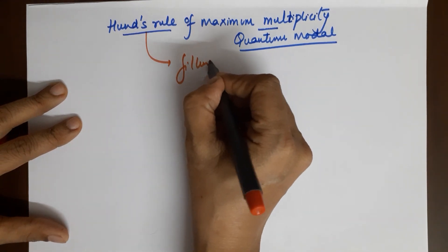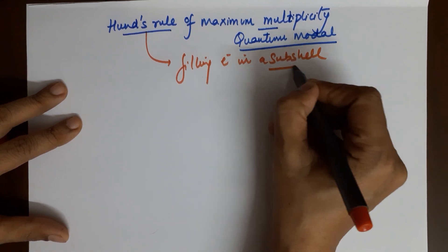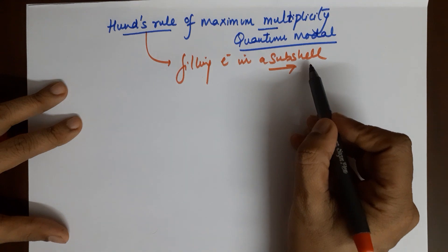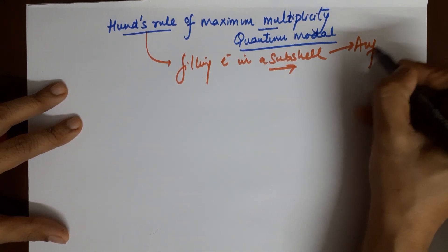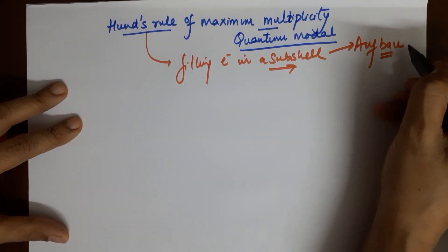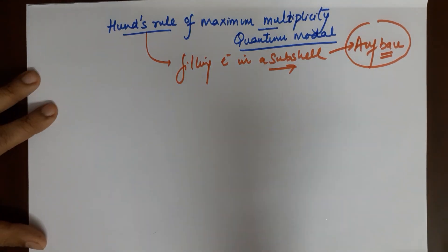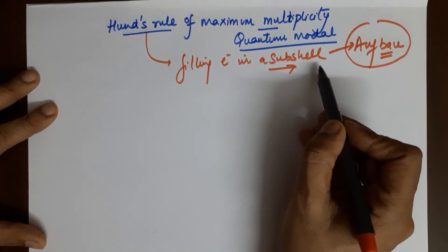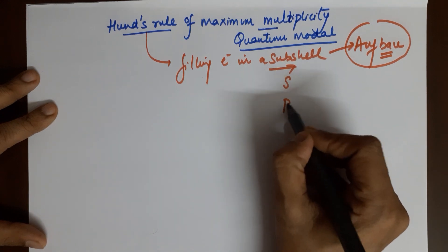The first thing you already know is that electrons are to be filled in the subshells in increasing order of energies — that was the Aufbau rule, which is already on the channel. You can have a look at it if you do not know it, as it is a prior requirement to understand this topic. According to Aufbau, you fill electrons in subshells in increasing order of energies.